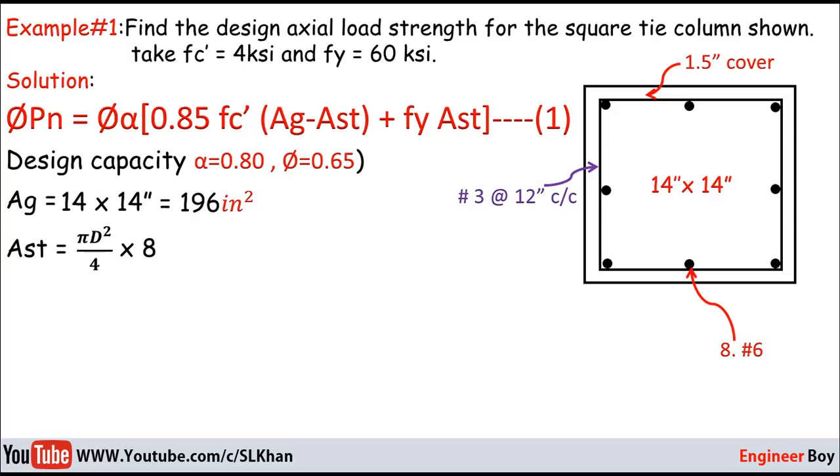Now we plug in the values. The diameter is known: that's #6 bar, which means 6/8 inches. So π(6/8)²/4 × 8, and that gives Ast = 3.535 in².